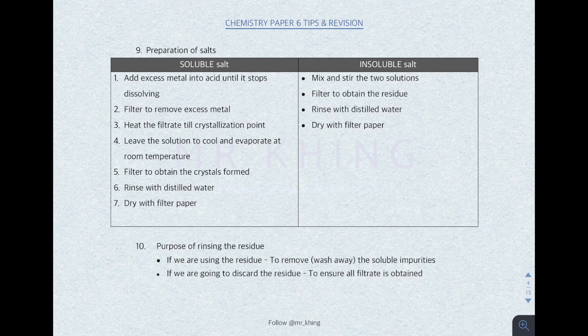You also need to know how to prepare salts — soluble salt and insoluble salt. To prepare a soluble salt: first, add excess metal into the acid to ensure all acids are fully reacted. Then filter to remove the excess metal. Heat the filtrate until crystallization point, leave the solution to cool and evaporate at room temperature, then filter out the crystals. Every time you carry out filtration, it is always followed by rinsing with distilled water and drying with filter paper.